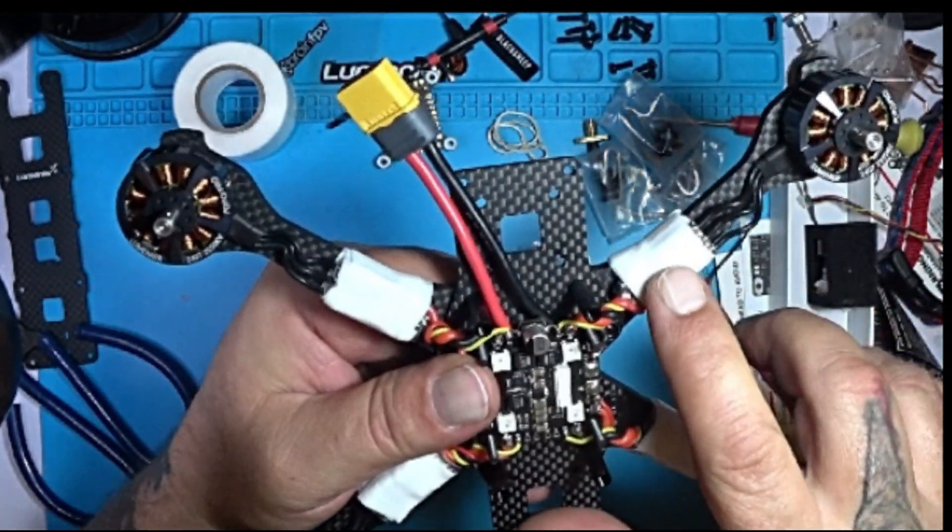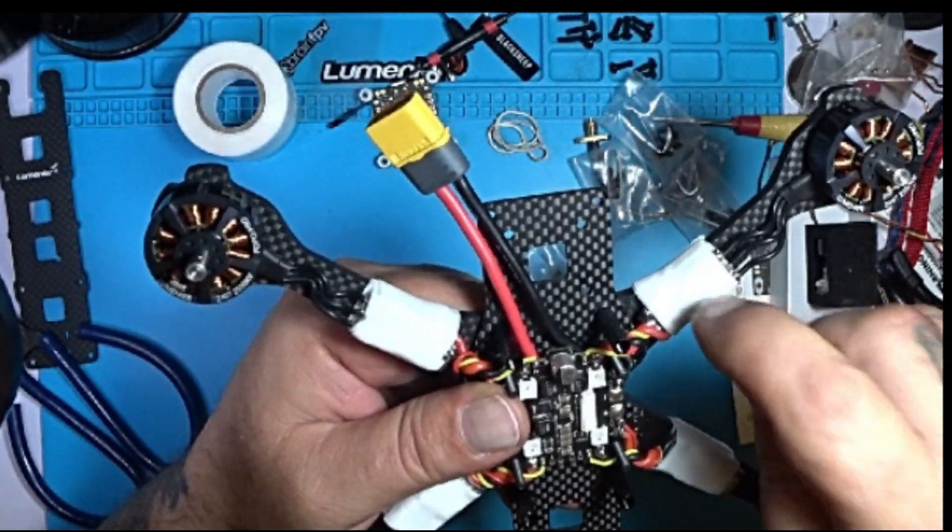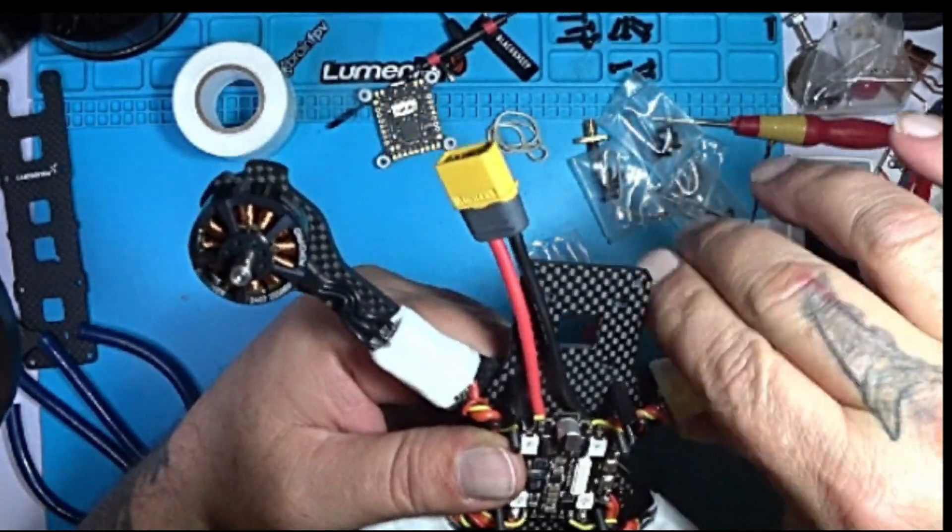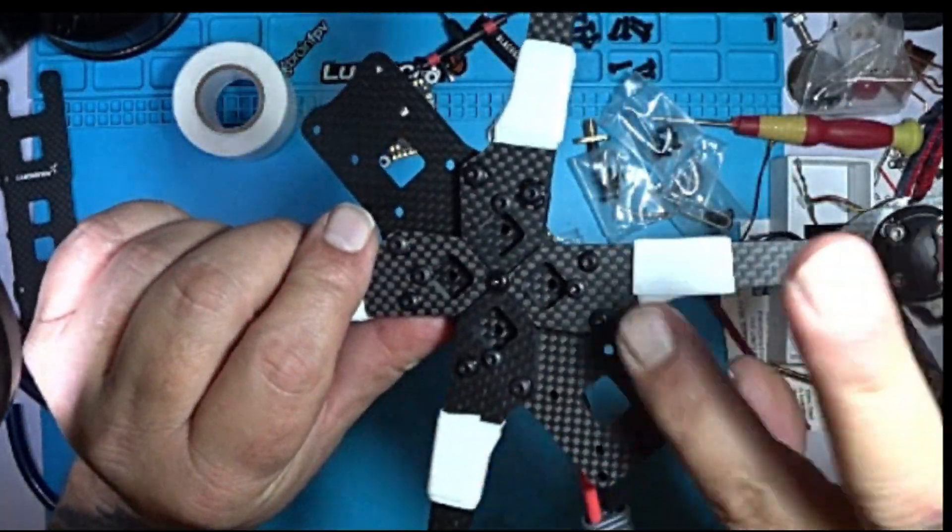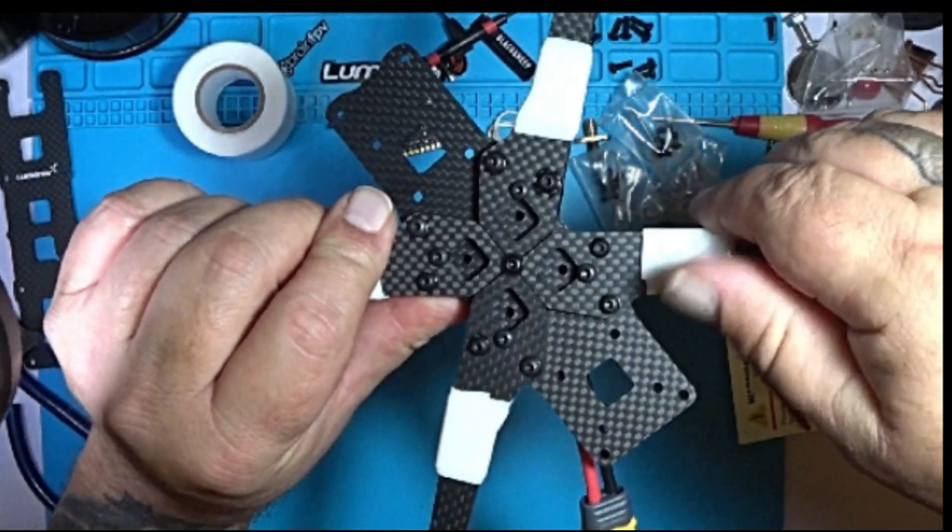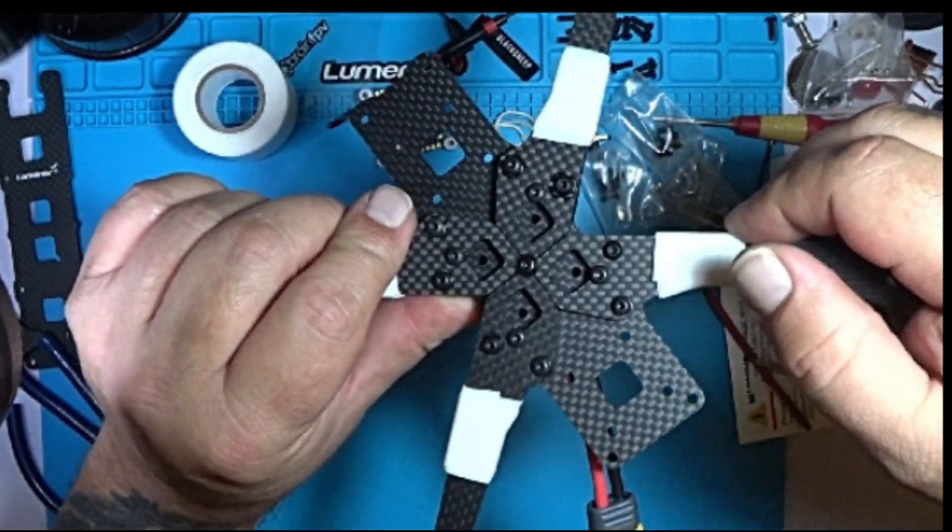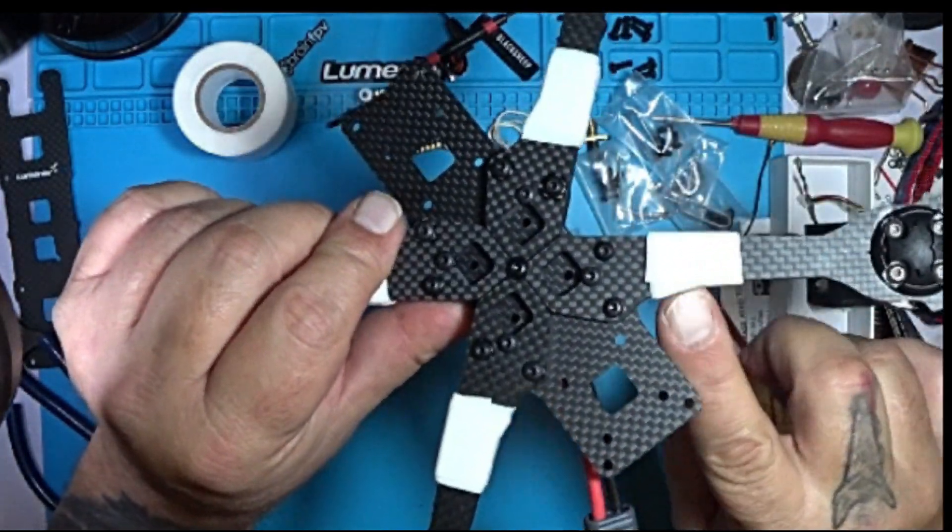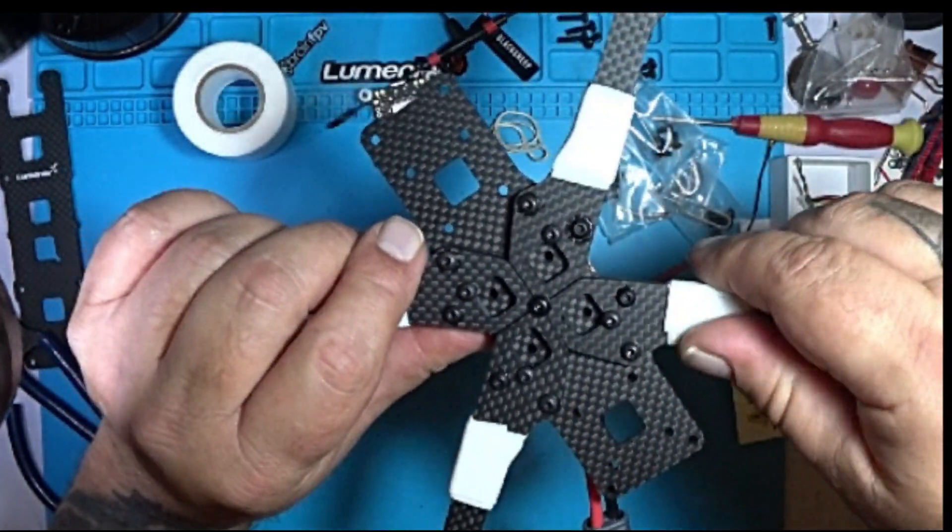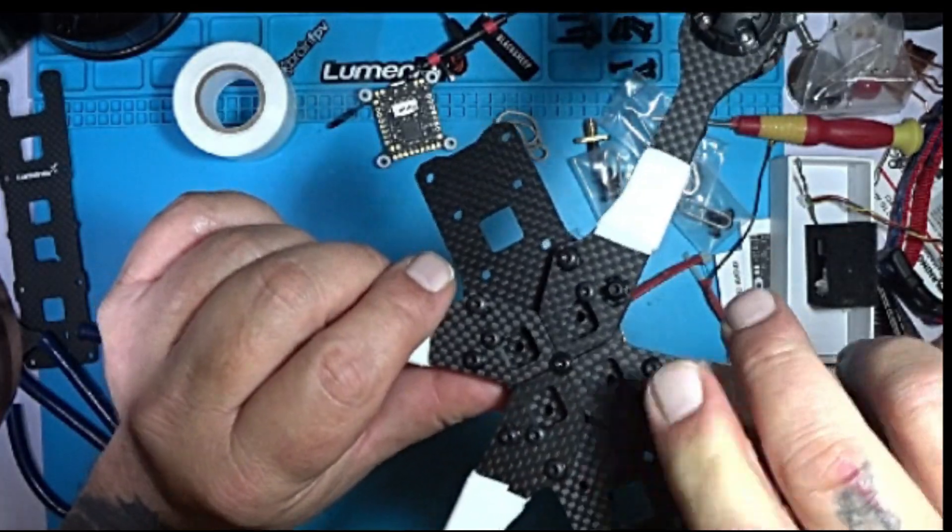It will actually provide very good prop strike protection because it's pretty thick, durable, and strong. Once it fuses to itself, it's not going anywhere. Not like regular electrical tape that'll start to peel after a while from the wind, the elements, or the dewy grass. This will not.